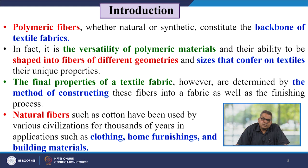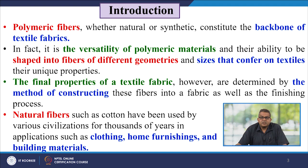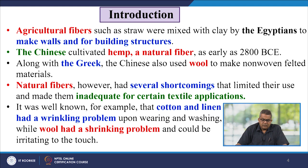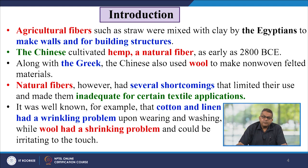Natural fibres like cotton have been used by various civilizations for thousands of years in applications like clothing, home furnishing, and building materials. Agricultural fibres like straw were mixed with clay by the Egyptians to make wall and building structures. The Chinese cultivated hemp as early as 2800 BC, and along with the Greek, also used wool to make non-woven felted materials. Natural fibres had several shortcomings — cotton and linen had a wrinkling problem, while wool had a shrinkage problem and could be irritating to the touch.